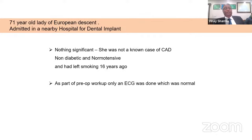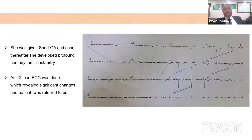For this case, she was a 71-year-old lady of European descent admitted in a nearby hospital for a dental implant. There was nothing significant in the history — she was not a known patient of chronic disease, was non-diabetic and normotensive. As part of the pre-op workup, only an ECG was done, which was found to be normal. She was taken to the OT, given a short general anaesthetic, and soon thereafter developed profound hemodynamic instability. A 12-lead ECG was done, which revealed significant changes, and the patient was referred to us.